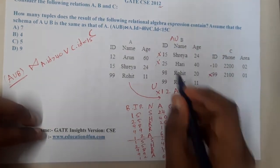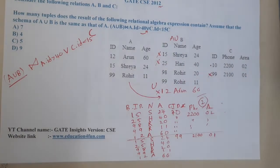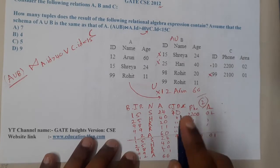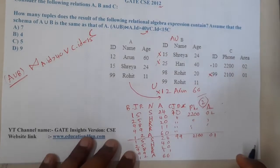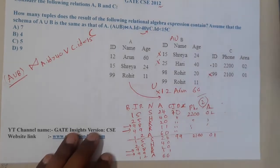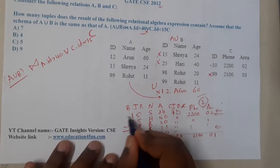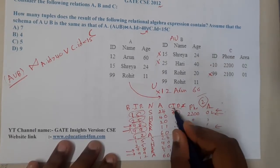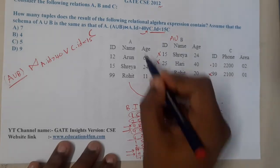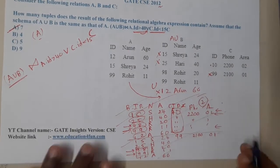I now realize the mistake — this is an OR operation, not AND. With OR, either condition being true is sufficient. So I can handle both cases separately. When A dot id is greater than 40, two tuples from A union B qualify. When C dot id is less than 15, one tuple from C qualifies. Using the first approach — checking conditions first — is best, which is why I always check conditions first.